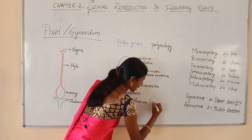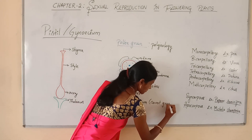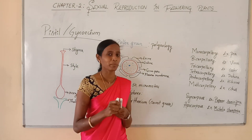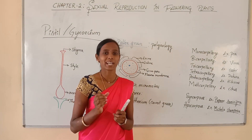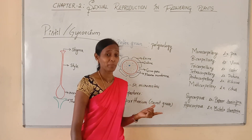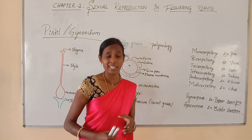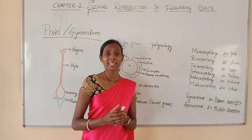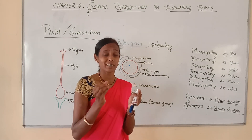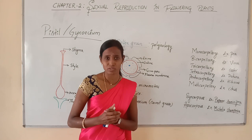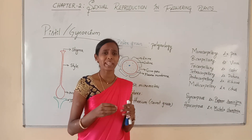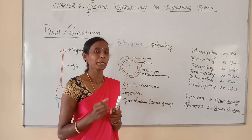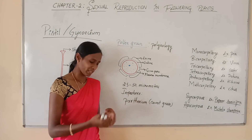Parthenium, commonly called carrot grass, and in local language known as kangrasgida. Parthenium came to India as a contaminant in imported wheat, but nowadays it is ubiquitous — meaning it can be found everywhere. The Parthenium plant usually causes allergies in many people.